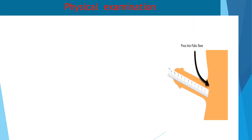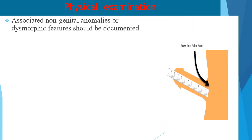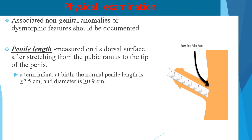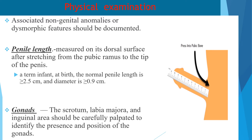On physical examination, associated non-genital anomalies or dysmorphic features should be documented. Penile length is measured on its dorsal surface after stretching from the pubic ramus to the tip of the penis. In a term infant at birth, the normal penile length is more than 2.5 cm and the diameter is more than 0.9 cm. The scrotum, labia majora, and inguinal area should be carefully palpated to identify the presence and position of the gonads.